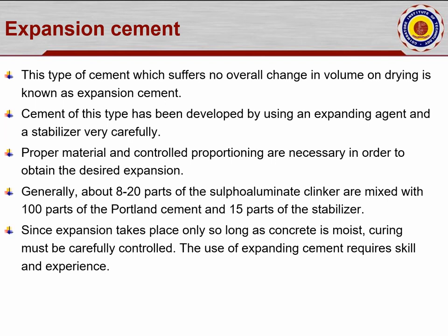Material selection must also be proper so that binding can be developed. Generally about 8 to 20 parts of sulfoaluminate clinker are mixed with 100 parts of Portland cement and 15 parts of the stabilizer agent. In this ratio, the expansion limit can be obtained easily, as developed through models and research conducted in both laboratory and field conditions.